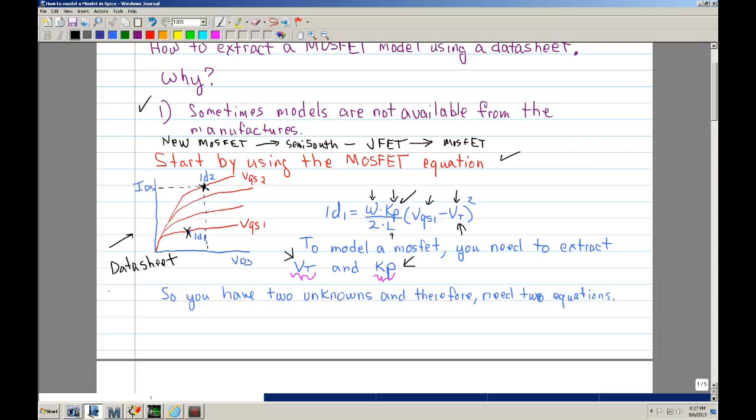And if you don't, you can get it from a curve tracer. So as long as you have some kind of a family of curves, then what you want to do is you want to get two plots, or you want to use two of these curves. You want to use one that is at the lower current. Basically, this is IDS. This is the current from drain to source. And then this is VGS, or VDS. So you want to use one of your lower ones.